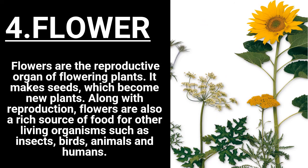The fourth part is the flower. Flowers are the reproductive organs of flowering plants. They make seeds which become new plants. Along with reproduction, flowers are also a rich source of food for other living organisms such as insects, birds, animals, and humans.